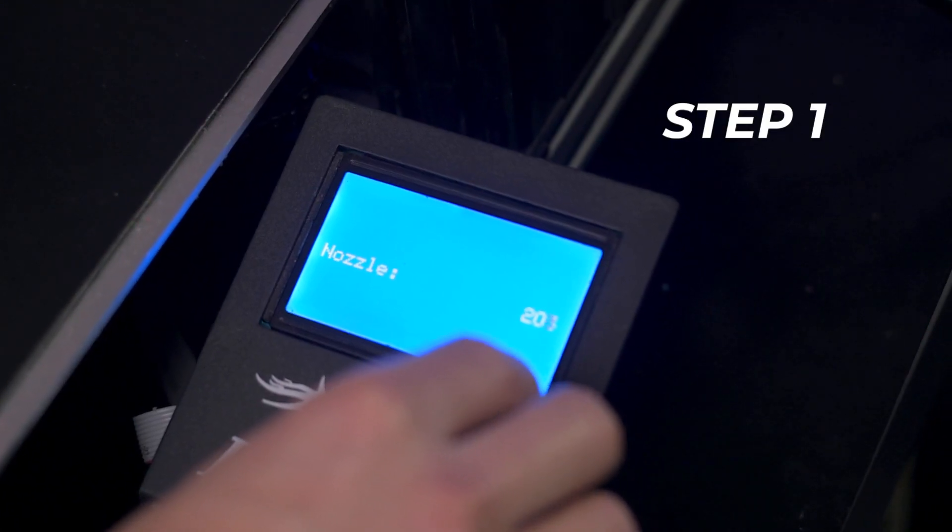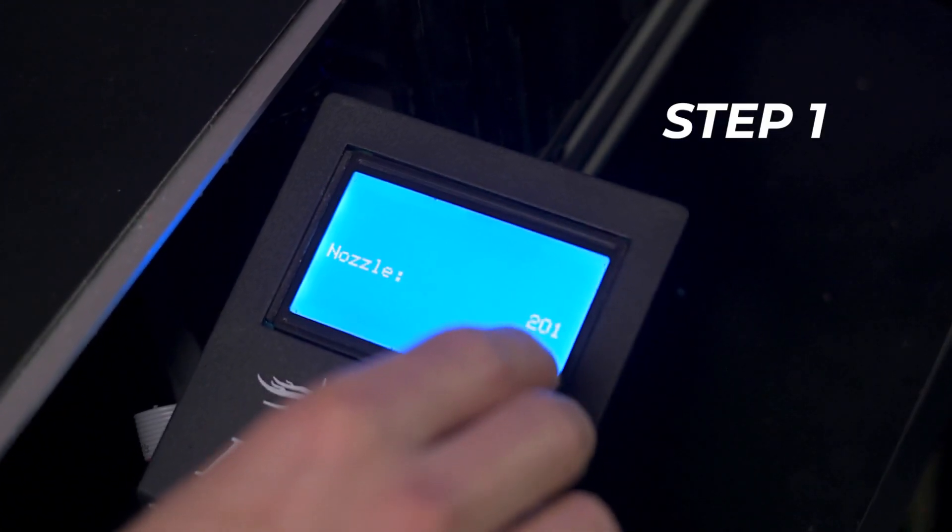For the 3D printers that need a more hands-on approach, unloading material manually is quick and easy once you know the right method. Step 1: First, heat up the hotend to the printing temperature of the material currently loaded.